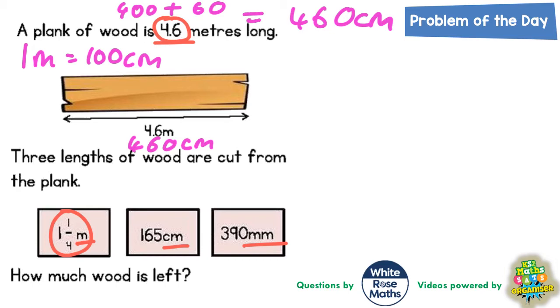Now the next job is to turn the other three measurements into centimeters as well, the lengths of wood that are being cut from the plank. Well, if a whole meter is 100 centimeters and half a meter is half of that, so 50 centimeters, a quarter of a meter would be half the 50 centimeters again, which would be 25 centimeters. So one and a quarter meters would be 100, which is the one whole meter, and then a quarter is an extra 25, so it's 125 centimeters.